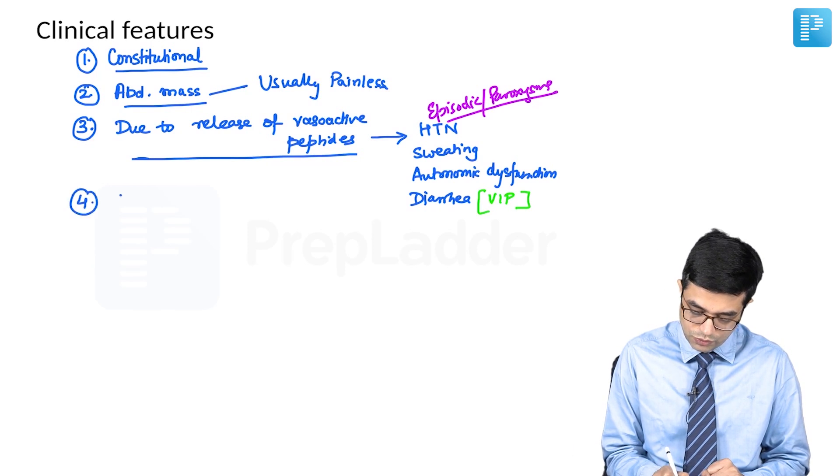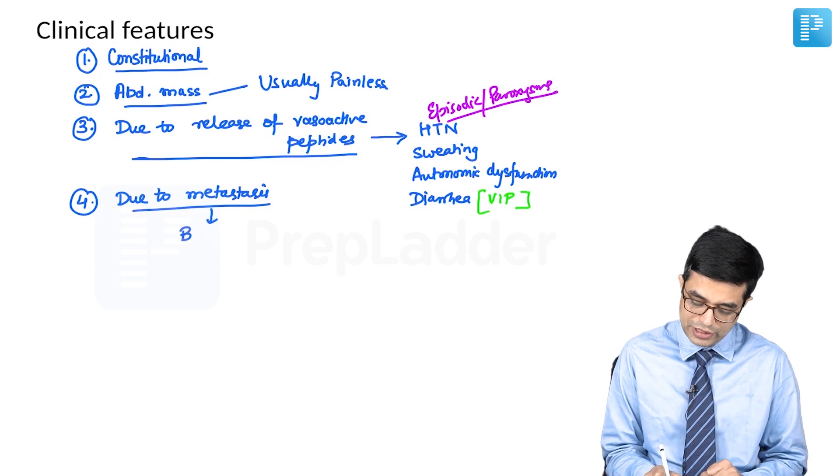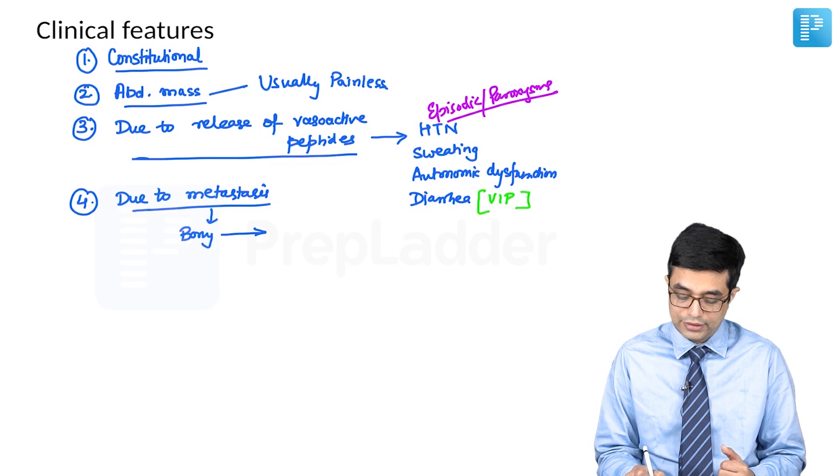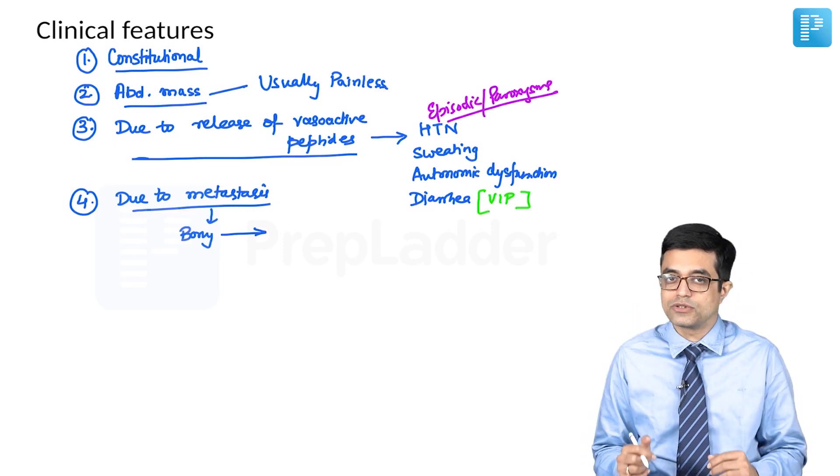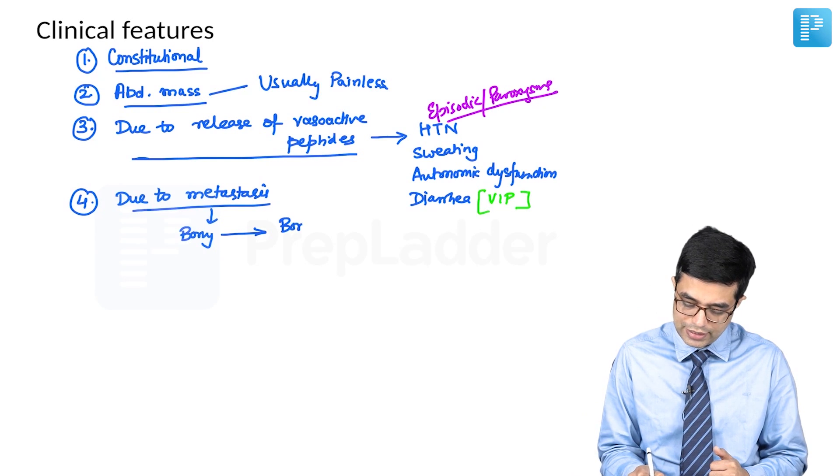The features may be related to metastasis. Many children come to attention with metastasis alone. The most common site of metastasis is bony metastasis. Bony metastasis tends to occur in the skull region, long bones, and spine. There may be bony pains and irritability.